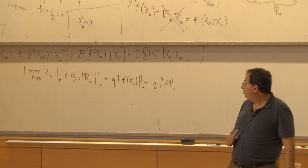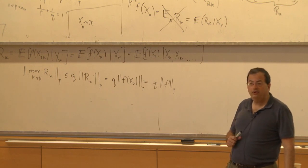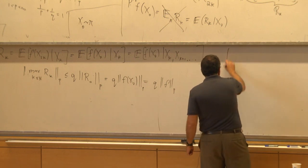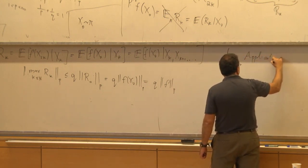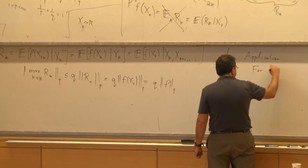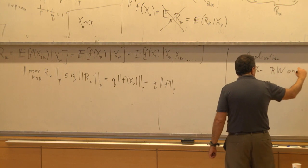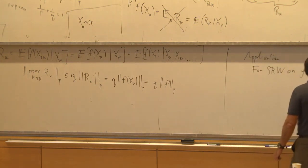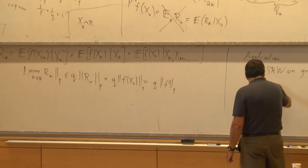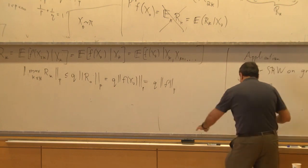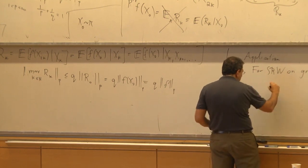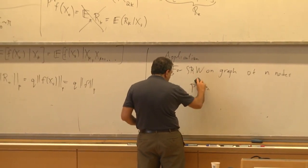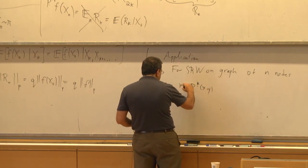Besides what I'll show in more detail today, we use this with Alex Jai and James Norris to answer a question of David Aldous on Markov chains. This application says: for a simple random walk on any graph of n nodes...